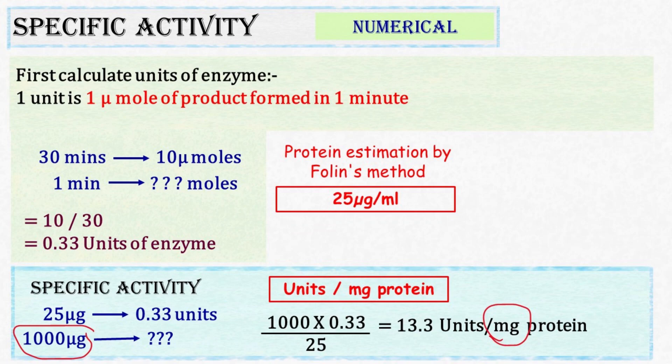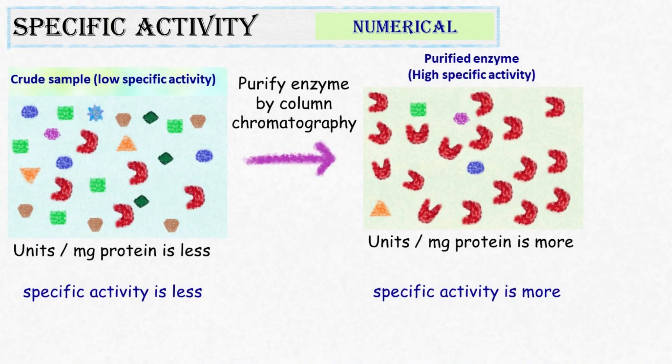So, this is how we calculate specific activity of enzyme. If the enzyme sample is crude, then the specific activity will be very less. If the enzyme is purified, then the specific activity will be increased by several fold.